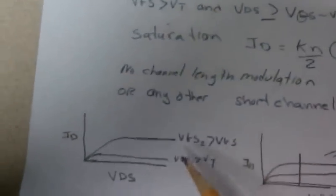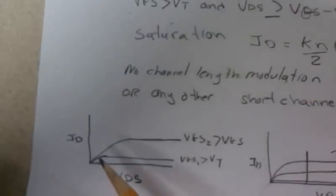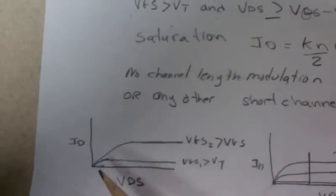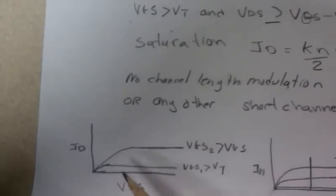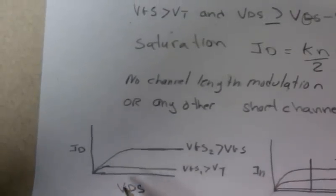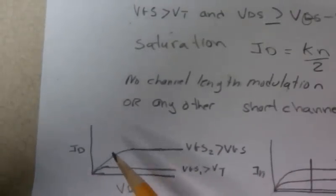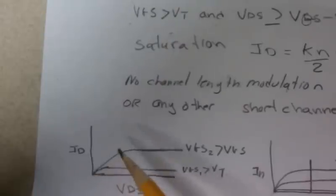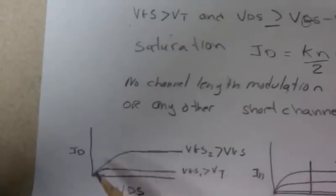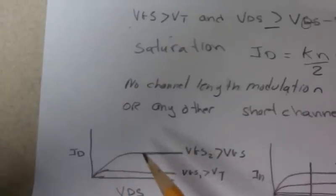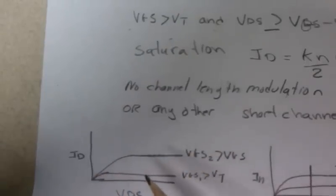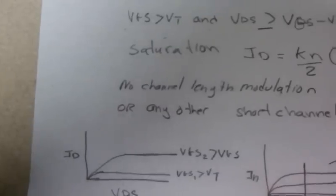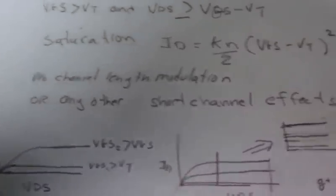Now, if we just do a hand-drawn plot, we can see that for no current, that would be down here. This area would be linear, and where the current flattens out is considered saturation.